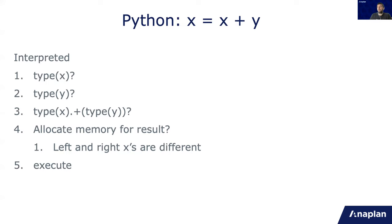So a plus operator for every two types is different. Also, it might need to allocate memory for the result. In this example, or in Python in general, the x on the left side and the x on the right side are different. They don't have the same memory address. And lastly, you can execute the command after you know everything.